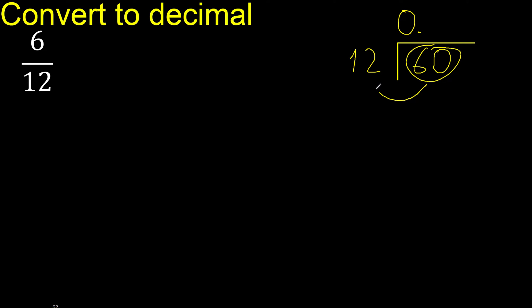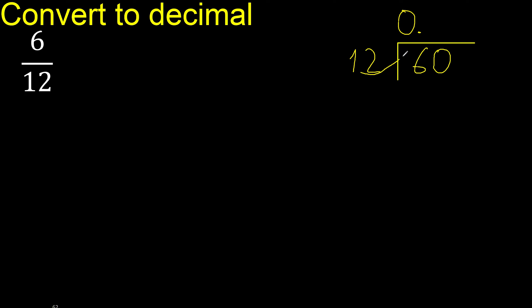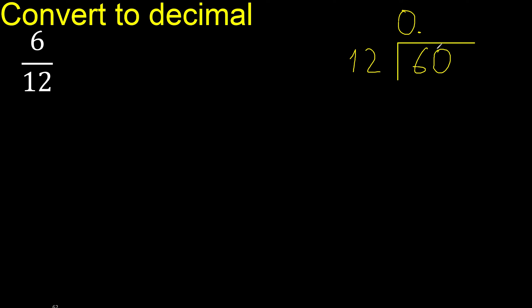60 is not less than 12, so we work with 60. 12 multiplied by what number is nearest to 60? 12 multiplied by 7 is 84 — excessive. Multiplied by 6 is 72 — excessive. Multiplied by 5 is 60 — ok.